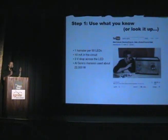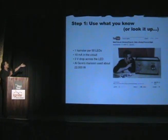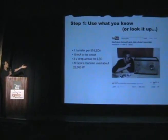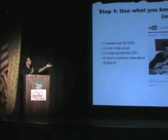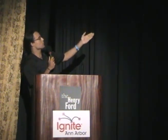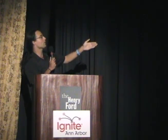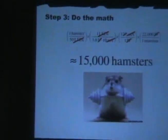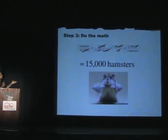To calculate how many hamsters it would take to power a mansion, you start with what you know and look up some other things. I know that one hamster might be able to power 50 LEDs. I can look up how much power Al Gore's mansion took. Then I cancel units — hamsters per LED times LEDs per volt gives hamsters per volt — and doing this a bunch of times with a little math, I get hamsters per mansion. Doing out the math, you get about 15,000 hamsters to power a mansion.